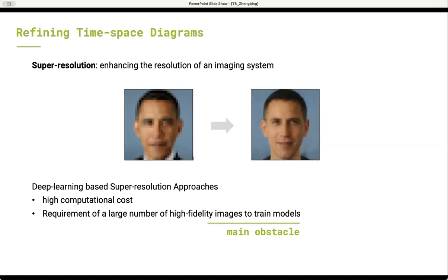However, there are two drawbacks for those deep learning-based super-resolution approaches. One is the computational cost is high, and the other is training a model needs a large number of high fidelity image data.